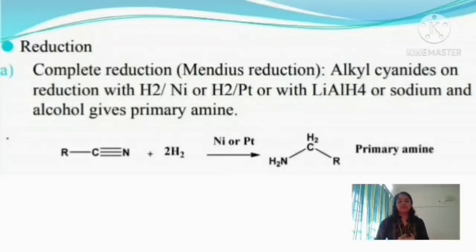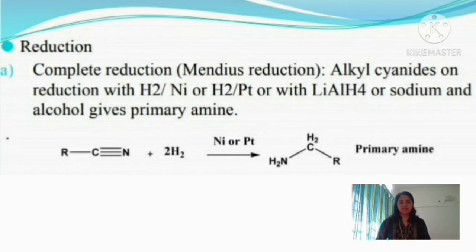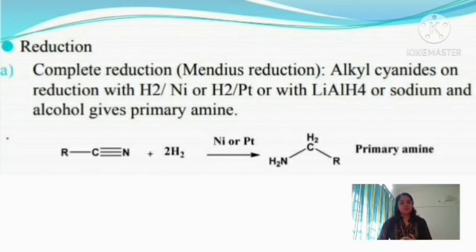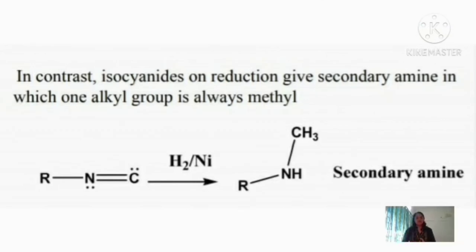Reduction of cyanide and isocyanide: complete reduction can be carried out using H₂/Ni, H₂/Pt, lithium aluminium hydride, or sodium in alcohol. When alkyl cyanide is treated with any of these reducing agents, a primary amine is obtained — hydrogen is added across the C≡N triple bond. This is called Mendius reduction. In the case of isocyanide, complete reduction gives mainly a secondary amine.